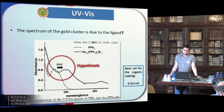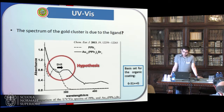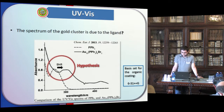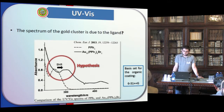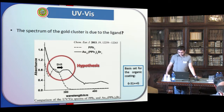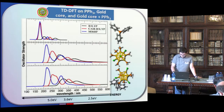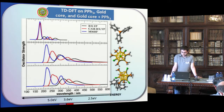Postponing the issues related to the silver cluster, we approached the problem of investigating the electronic spectrum of the second gold cluster. In literature, it has been speculated that this optical spectrum could be the red-shifted spectrum of the ligand. This is also what I wrote in the abstract of this presentation. However, with our time-dependent calculations, it seems that this is actually not the case.